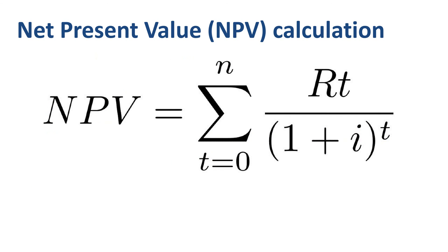The main idea of net present value is very simple: time is money. The net present value method takes the time value of money into account by translating all future cash flows into today's money, and then adding up today's investment and the present values of all future cash flows.